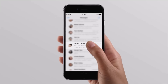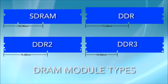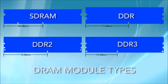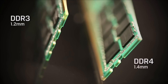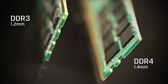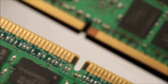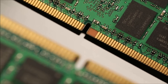RAM comes in two different types: SDR RAM, which means Single Data Rate RAM, and DDR RAM, which means Double Data Rate RAM. We then have different rate types, so we get the likes of DDR2, DDR3 and DDR4, meaning Double Data Rate type 1, 2, 3, and 4.